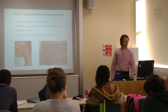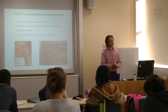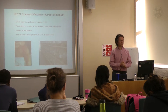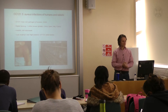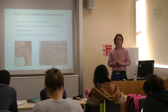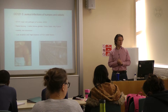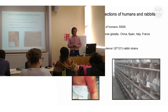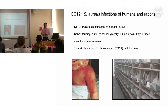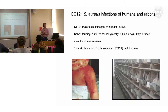The last thing I have time to tell you about is a study which we've just published on another clonal complex of Staph aureus, CC121, which is one of the major global causes of human infection. It tends to be associated with skin and soft tissue infections in humans, such as staphylococcal scalded skin syndrome affecting infants, and impetigo.